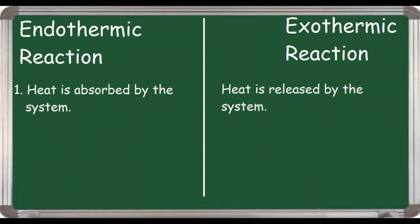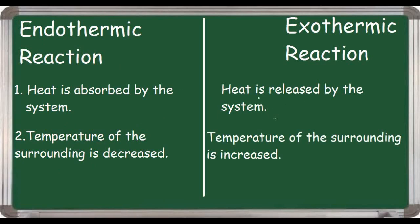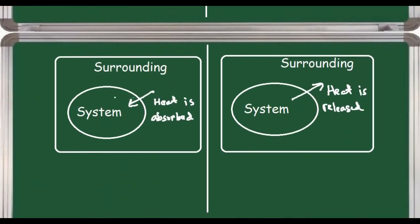The second point: for an endothermic reaction, the temperature of the surrounding decreases. For an exothermic reaction, the temperature of the surrounding increases. If heat is absorbed by the system, it is clear that the temperature of the surrounding will decrease. And as heat is released from the system to the surrounding for exothermic reactions, the temperature of the surrounding will increase.